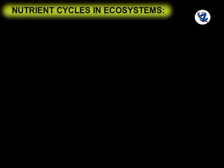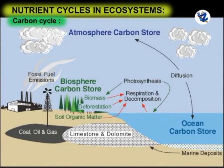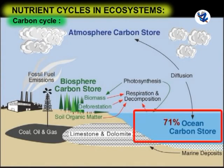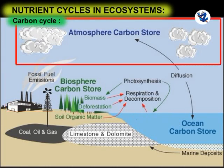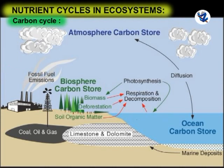In the carbon cycle, it is estimated that 71% of global carbon is found in dissolved form in oceans. The reservoir of carbon is found in the hydrosphere (oceans), lithosphere (fossil fuels), and in the atmosphere as carbon dioxide. In the ocean, it remains stored as bicarbonates and as limestone and marble rocks.